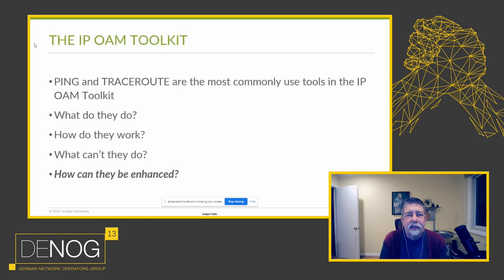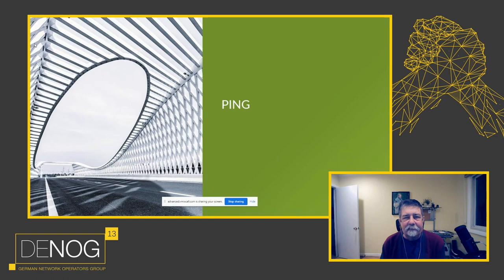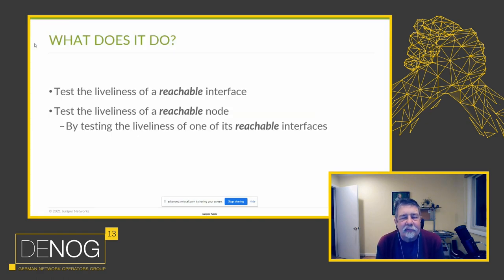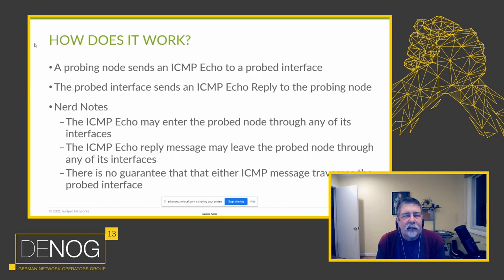Let's talk about the IP OAM toolkit. Ping and traceroute are the most commonly used tools in the OAM toolkit — you've probably used them today. We're going to talk about what they do, how they work, what they can't do, and how they can be enhanced. We'll start with ping. Ping tests the liveness of a reachable interface — and reachable is emphasized here. It cannot test the liveness of an unreachable interface.